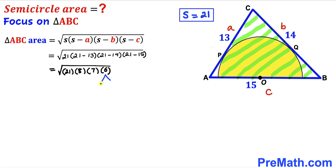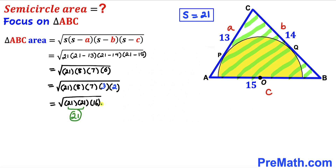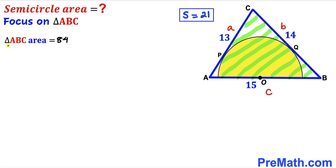We break down 6 into 3 times 2. Then 7 times 3 gives 21 and 8 times 2 gives 16. The square root of 21 times 21 is 21, and the square root of 16 is 4. So the area of triangle ABC equals 21 times 4, which is 84 square units.